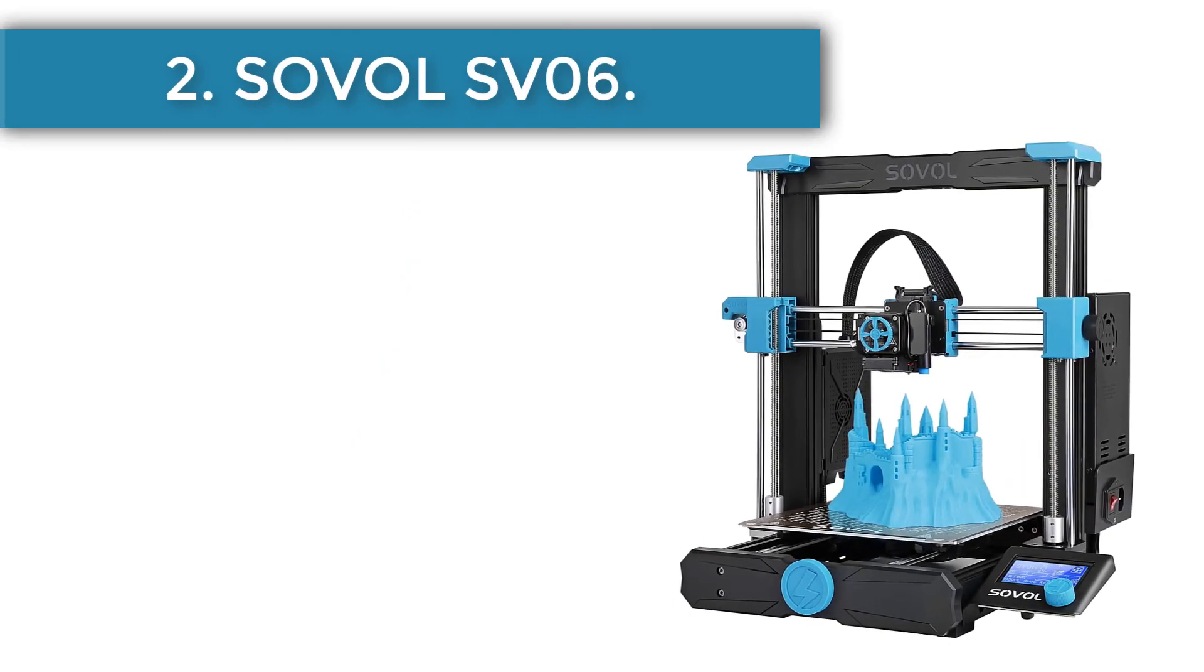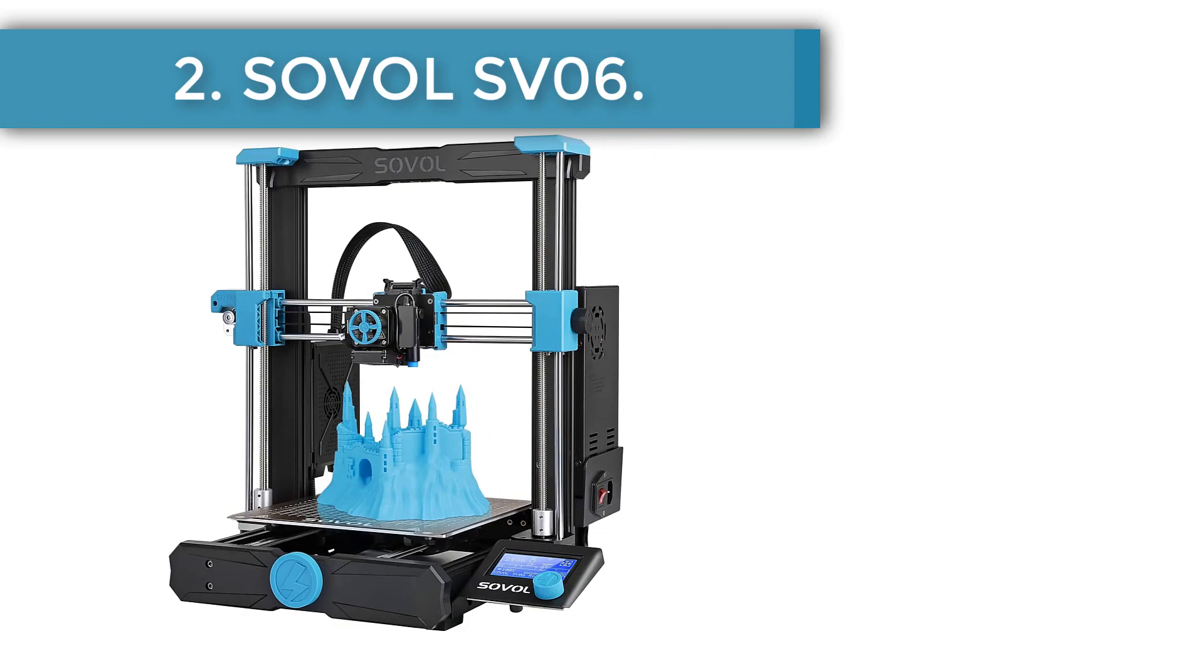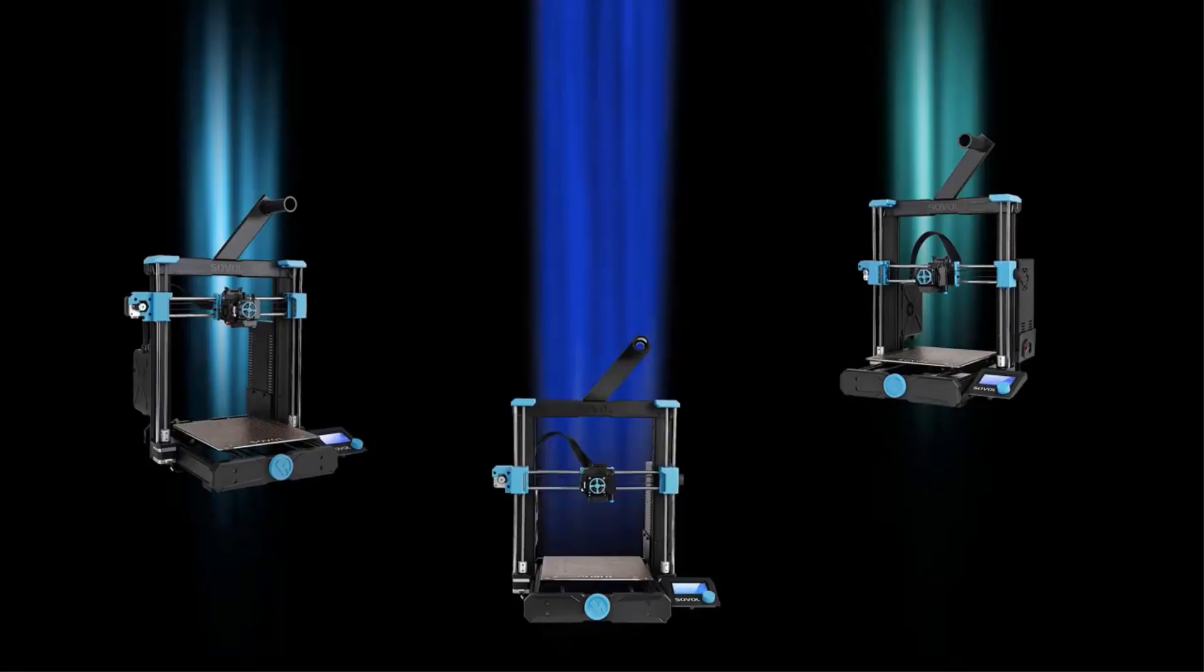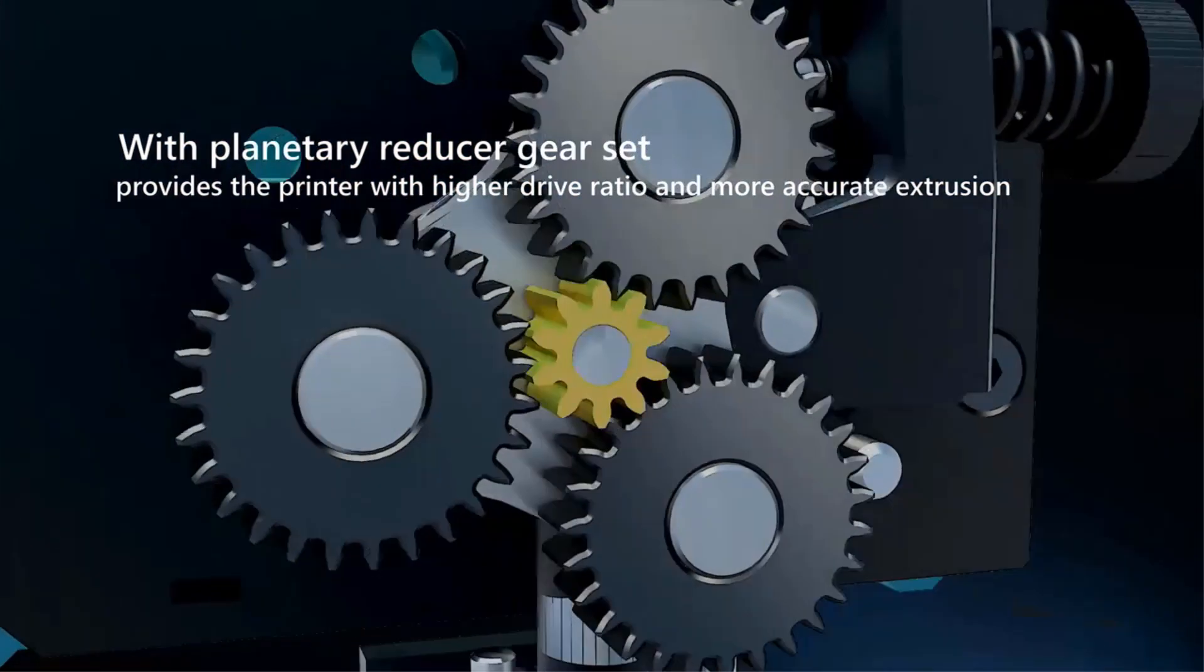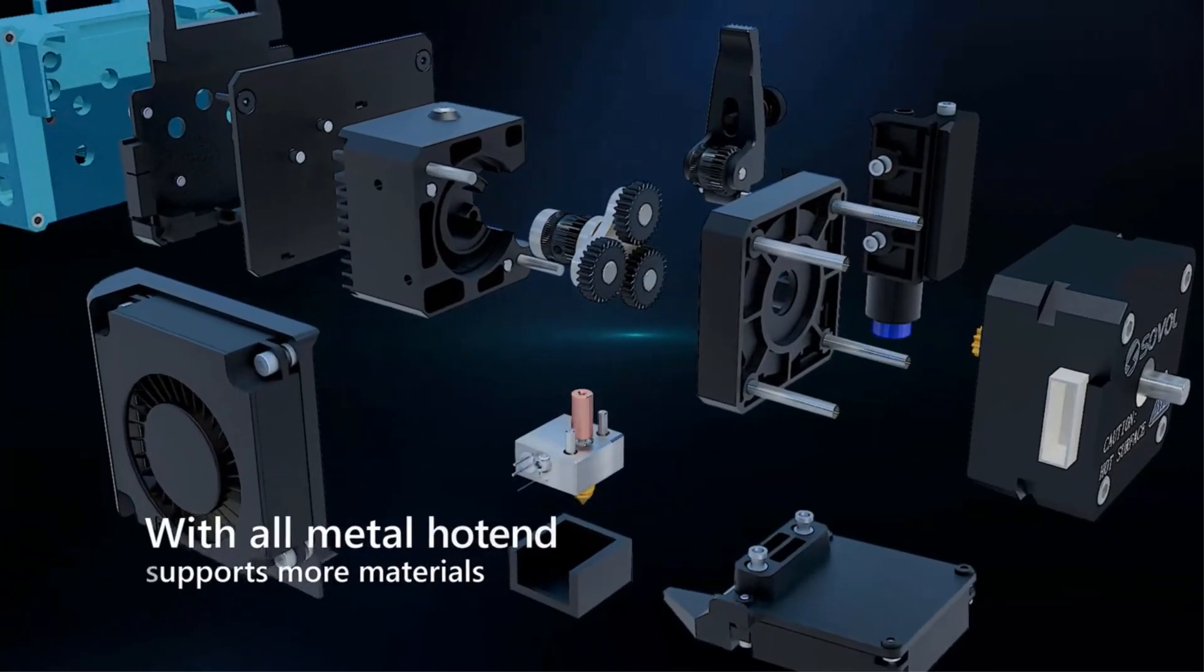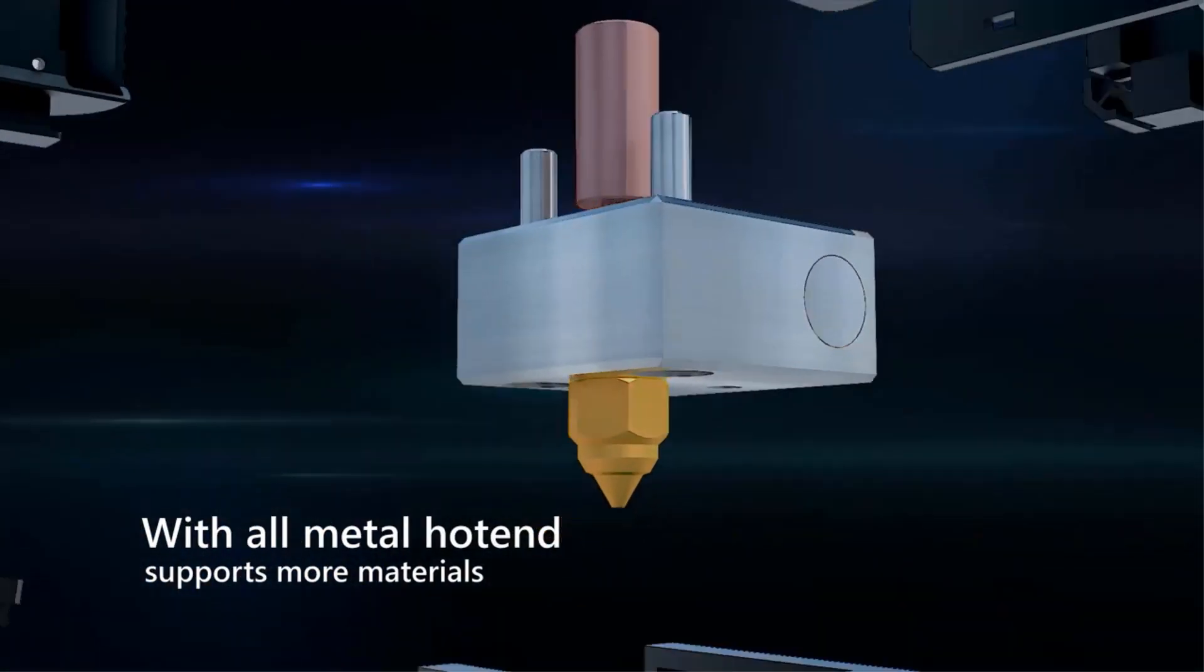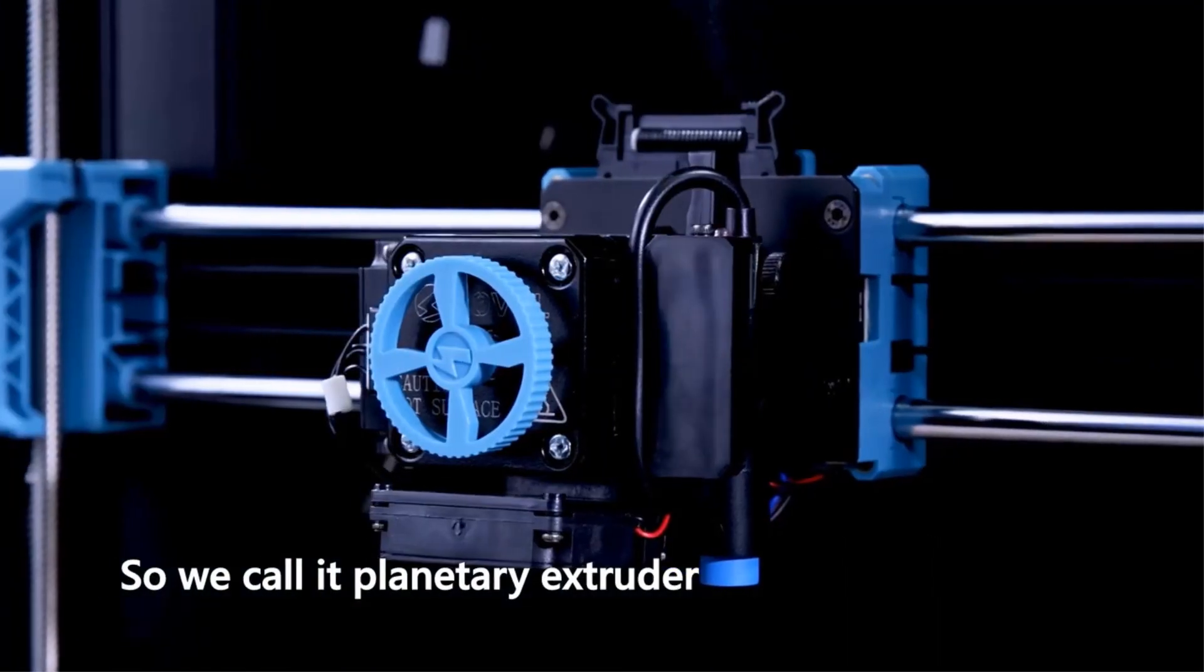Number two, Soval SV06. Priced at $235, the SV06 3D printer by Soval uses FFF technology to create physical objects and prototypes from a vast catalog of CAD models. Featuring a 22 by 22 by 25 print size, it is capable of printing medium and large sized prototypes for professional or individual use.